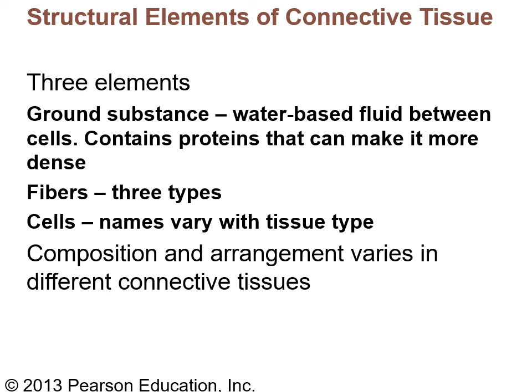Connective tissue is made of cells embedded in ground substance — a water-based medium between the cells. The ground substance can be more dense or thin depending on the amount of glycosylated proteins present. Think of it like a thickener: you can add a lot to make a solid blob or a little to make it slightly denser than water. So ground substance may be water-based but can be very dense.